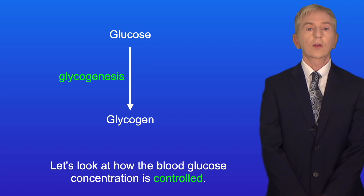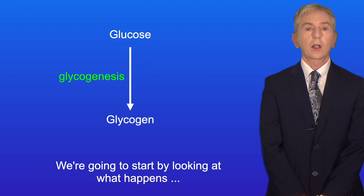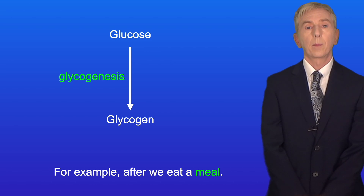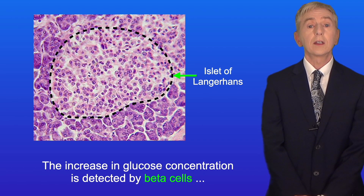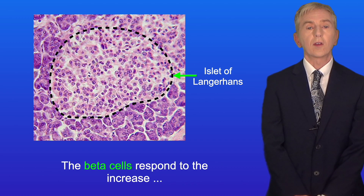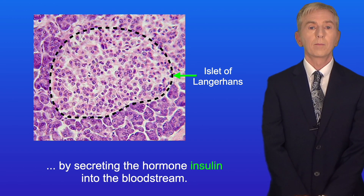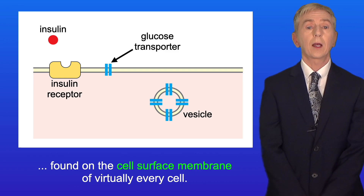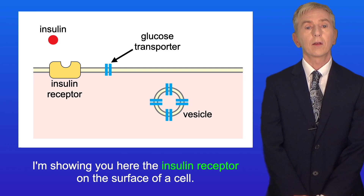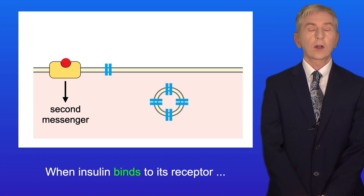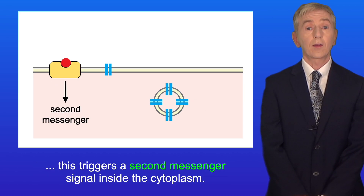Let's look at how the blood glucose concentration is controlled, starting with what happens when it increases — for example after we eat a meal. The increase in glucose concentration is detected by beta cells in the islets of Langerhans in the pancreas. The beta cells respond by secreting the hormone insulin into the bloodstream. The insulin receptor is a glycoprotein found on the cell surface membrane of virtually every cell. Inside cells, there are vesicles containing glucose transport protein channels. When insulin binds to its receptor, this triggers a second messenger signal inside the cytoplasm.